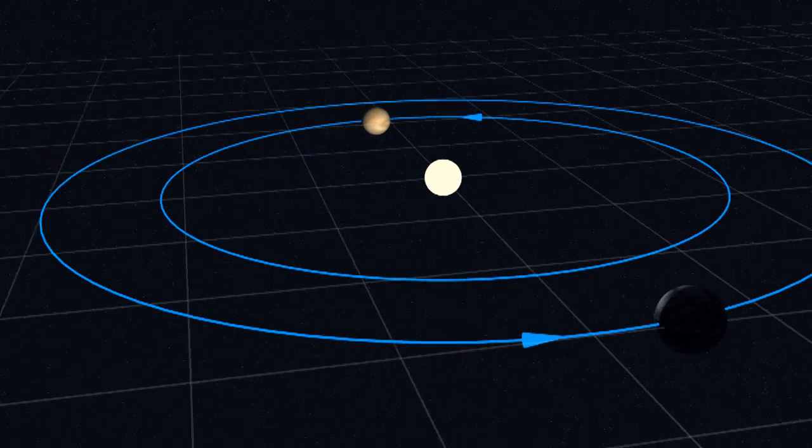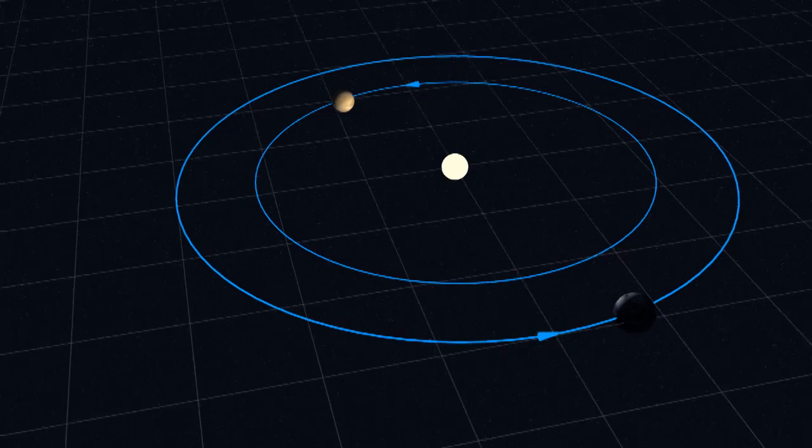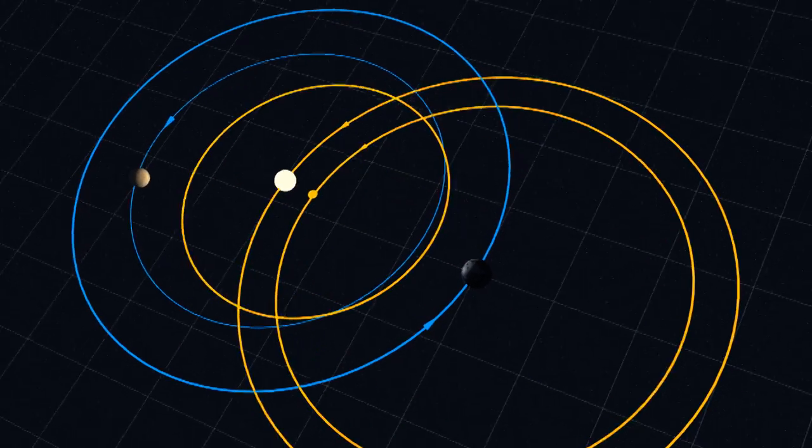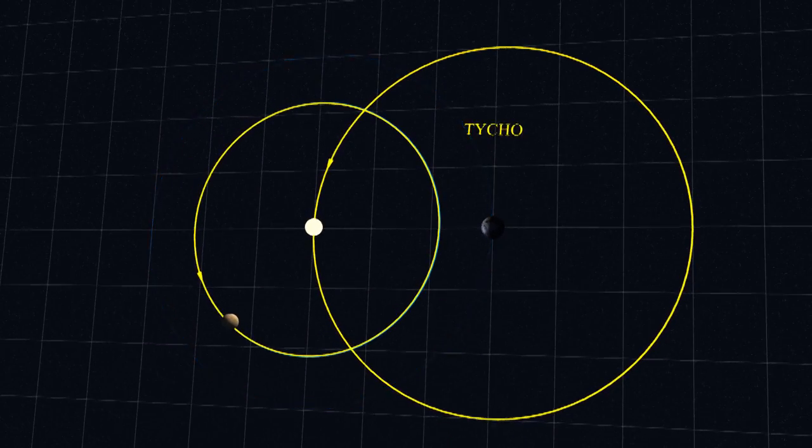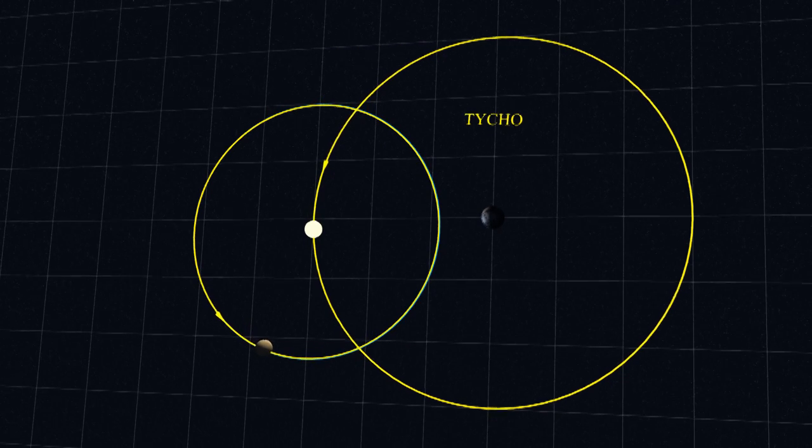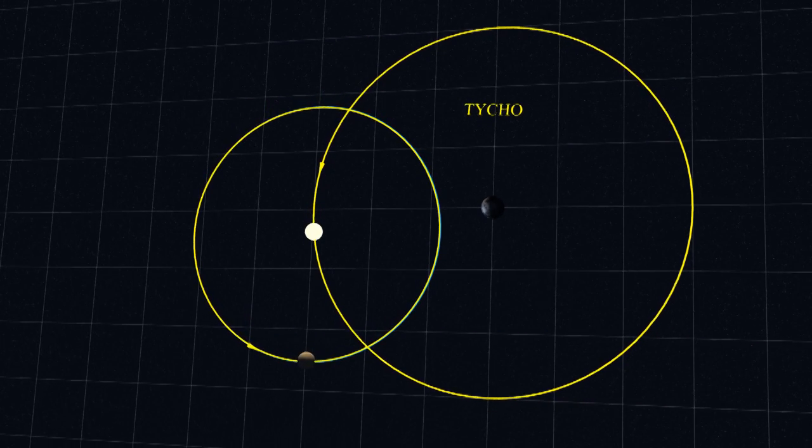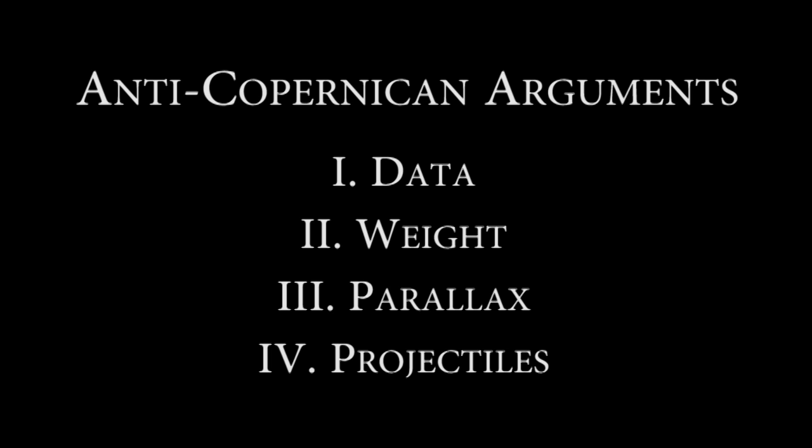So now, did everyone believe Copernicus? Nope. Because there was still a good alternative. Tycho suggested that the planets orbit the Sun, but the Sun orbits the Earth. This avoids all the problems of a moving Earth.